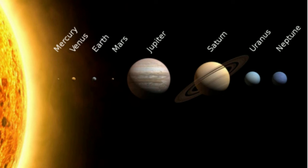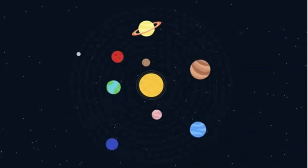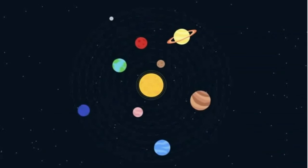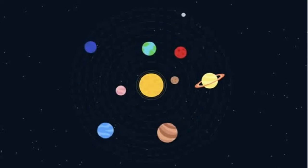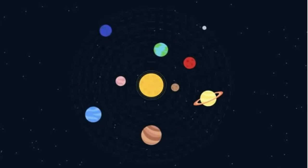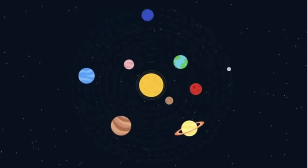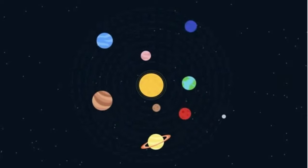Copernicus proposed that each orbit was a circle and the Earth, like other planets, revolved around the Sun. This solved several problems including the retrograde motion of the planets, arguing that such motion was only perceived or apparent rather than real.